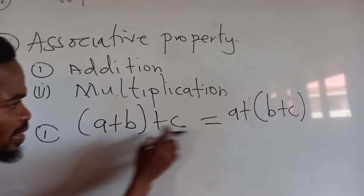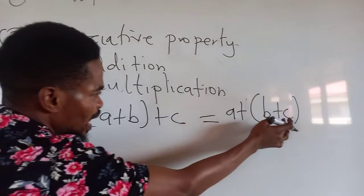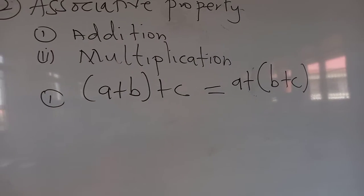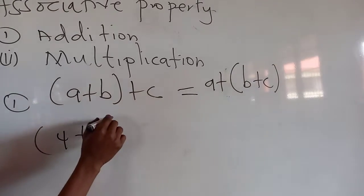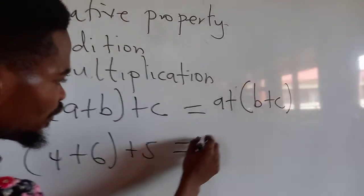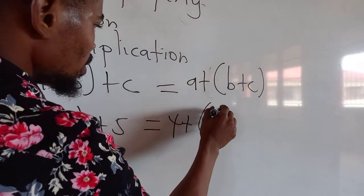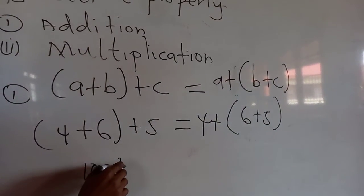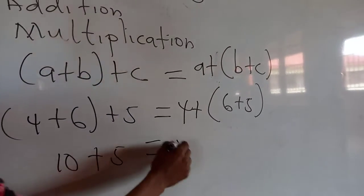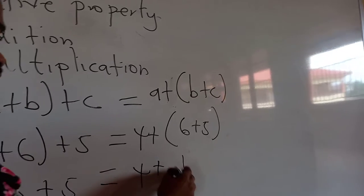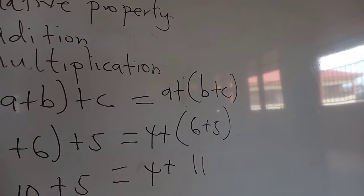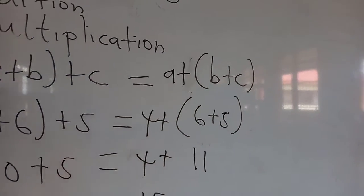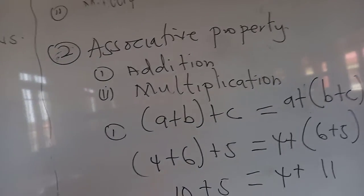The addition sign here remains the same. I am going to use numbers to represent this. Four plus six plus five can be written as four plus open bracket six plus five, close bracket. Solving the left: four plus six gives ten, plus five gives fifteen. Solving the right: six plus five gives eleven, and four plus eleven also gives fifteen. Hence addition is associative.